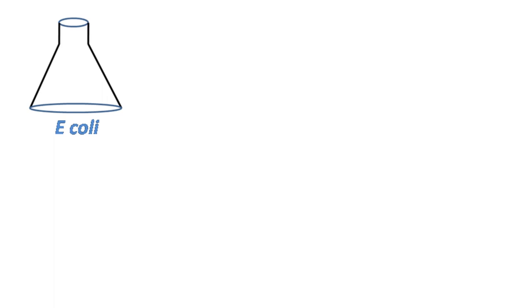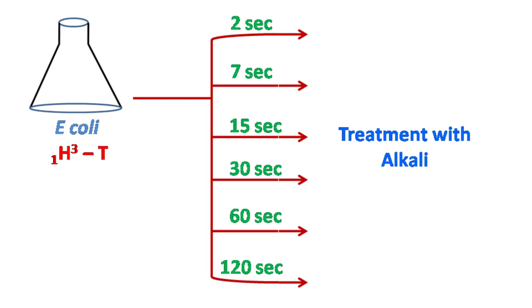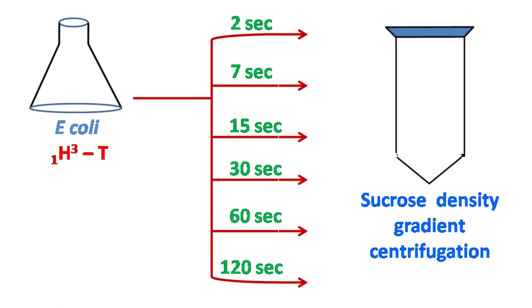So here's what Okazaki did. He grew E. coli cells and pulsed them with H3 thymidine. Samples were withdrawn at different time intervals, treated with alkali to separate both the strands, and analyzed by sucrose density gradient centrifugation.